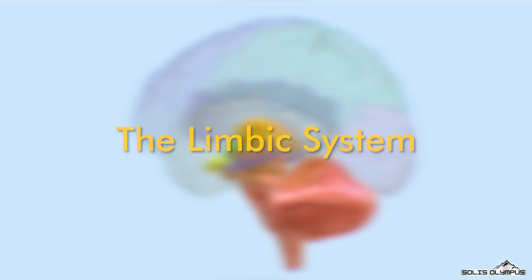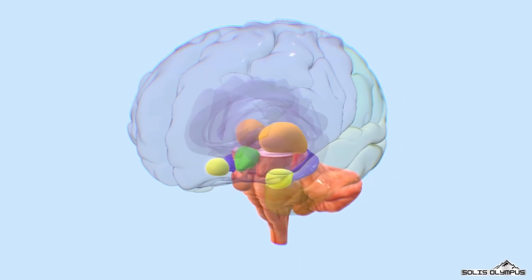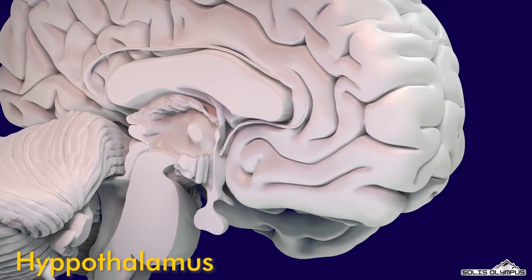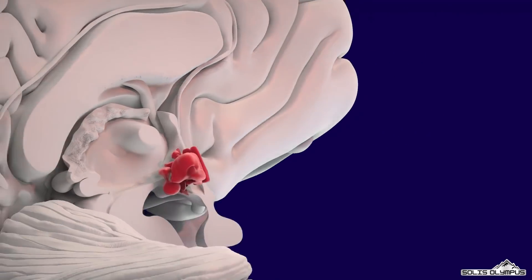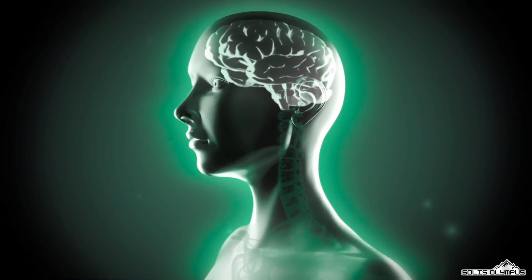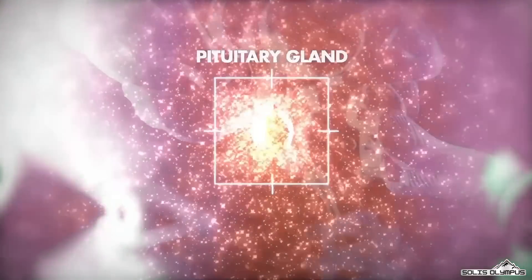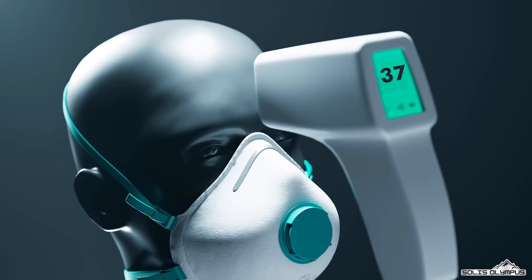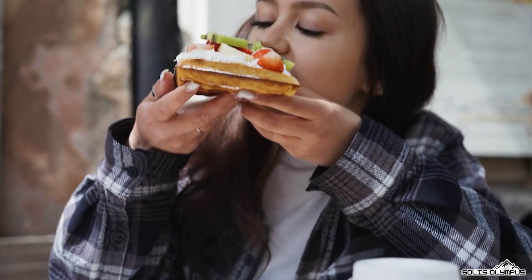The limbic system. The limbic system is a complex set of structures that lies just under the cerebrum. It includes hypothalamus, amygdala, and hippocampus. Hypothalamus. It is located just below the thalamus and above the pituitary gland. The most important function of the hypothalamus is to link the nervous system to the endocrine system via the pituitary gland. Hypothalamus also involves in controlling some somatic functions like body temperature, sleep, and appetite.